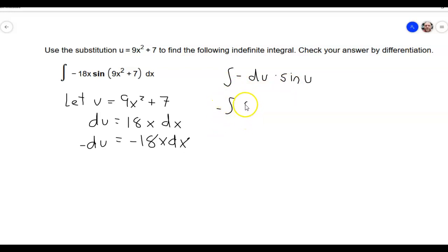I'll pull the negative out front. And I'll do the sine of u du. So this is the trig function that I want to find the antiderivative of.